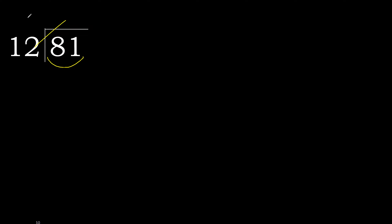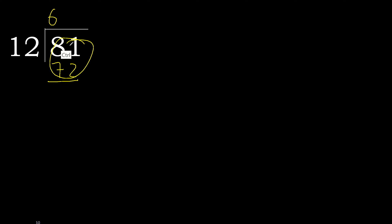12 multiply by 7 is 84, which is greater. So multiply by 6 — 72 is not greater. Subtract: 81 minus 72 equals 9.